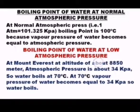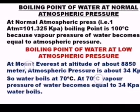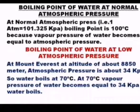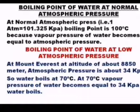First, let's look at the boiling point of water at normal atmospheric pressure — that is, at sea level. Normal atmospheric pressure, also called 1 atm, is equal to 101,325 kilopascals. At this pressure, the boiling point of water is 100 degrees Celsius, because the vapor pressure of water becomes equal to the atmospheric pressure.